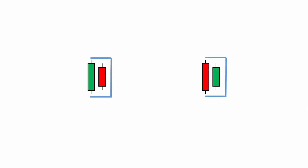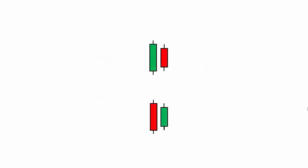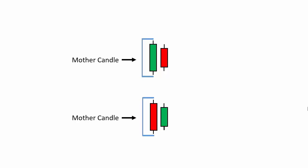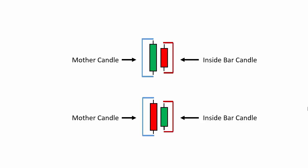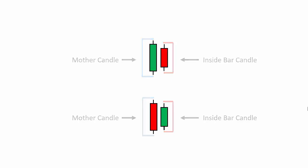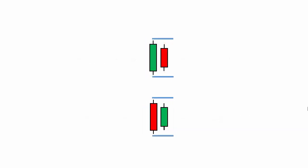These two candlesticks have to be two different directional candles, which means if one candle is a bullish candle, then the other candle has to be a bearish candle, or vice versa. In this candlestick pattern, we call the big candle the mother candle, and the next candle which stays inside the range of the mother candle is called the inside bar candle, because its total range stays inside the range of its mother candle.